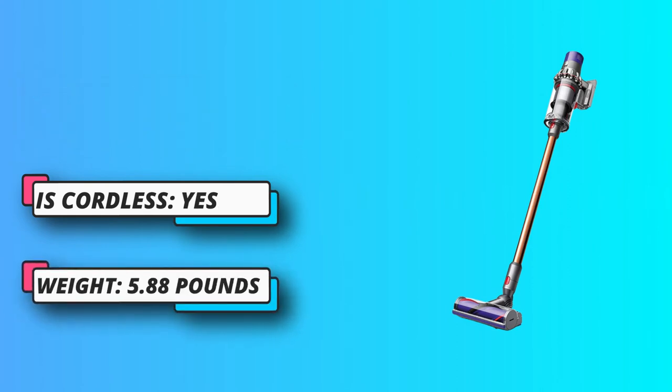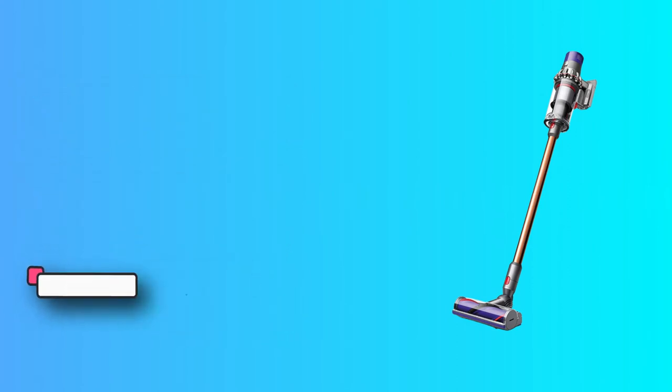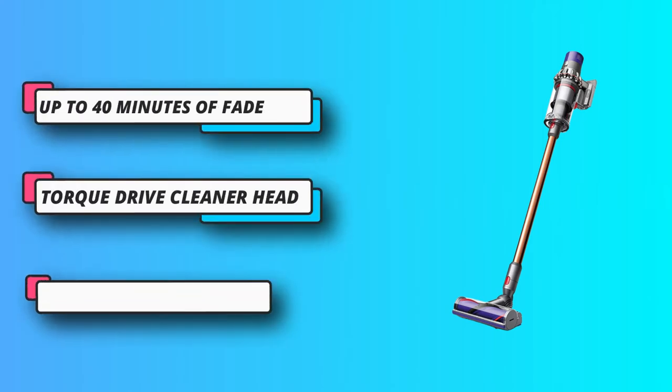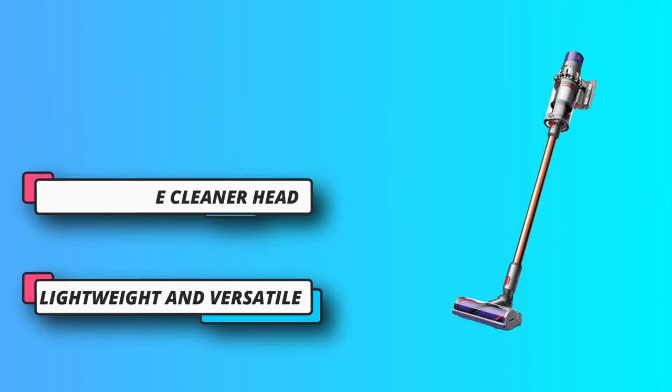A distinguishing feature of this Dyson Upright Vacuum is its ball technology. The ball technology enables this upright vacuum cleaner to maneuver in and around furniture or other obstacles with relative ease.